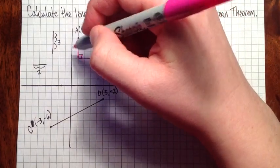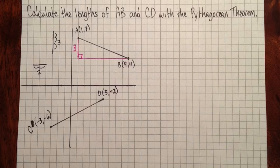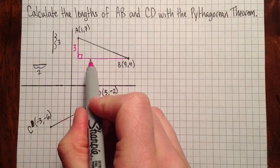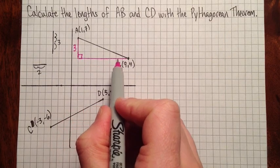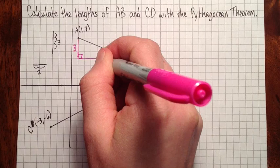So this leg is three long, and this leg, one, two, three, four, five, six, seven, eight, is eight long.